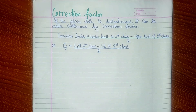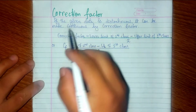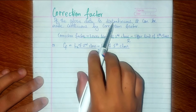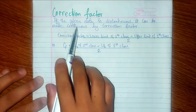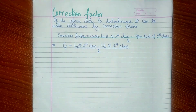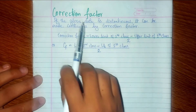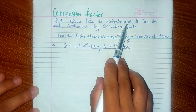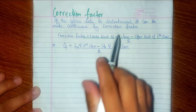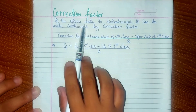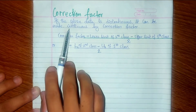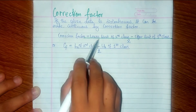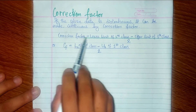Now, the correction factor: in statistics, if the given data is discontinuous, it can be made continuous by a correction factor. The data is discontinuous, so we apply the correction factor to convert discontinuous data to continuous data.